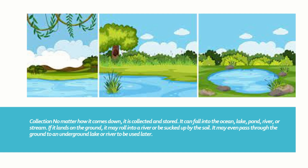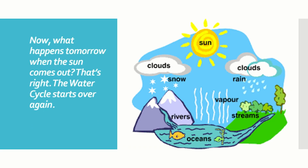Collection. It can fall into the ocean, lake, pond, river, or stream. If it lands on the ground, it may roll into a river or be sucked up by the soil. It may even pass through the ground to an underground lake or river to be used later. Now, what happens tomorrow when the sun comes out? That's right — the water cycle starts over again.